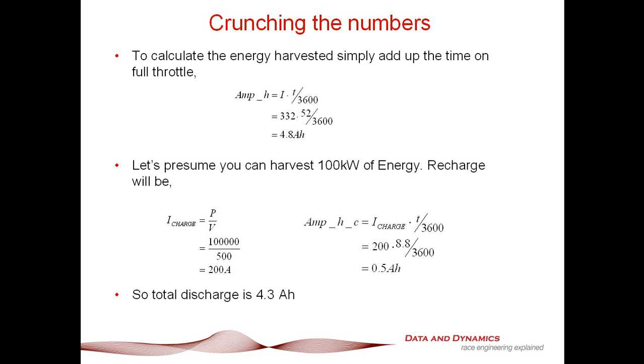So, at full noise, we're drawing 332 amps, so we're going to be using about 4.8 ampere hours. Now, let's presume that we can harvest about 100 kilowatts worth of that energy. So, what we've got here is that the amount of current we can put back in the battery pack is going to be P on V, which is 100,000 divided by 500 is 200 amp. And so, the amount of charge we can put back into the battery pack, which is going to be, we spend 8.8 seconds on the brakes, so that's 0.5 of an ampere hour. So, the total discharge is going to be 4.3 ampere hours.